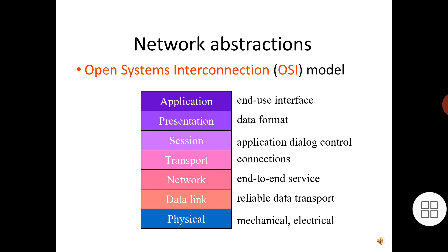The third layer is the network layer, which defines the basic end-to-end data transmission services. The network layer is particularly important in multi-hop networks. The fourth layer is the transport layer, which defines connection-oriented services that ensure data are delivered in the proper order and without errors across multiple links. This layer may also optimize network resource utilization. The fifth layer is the session layer, which provides mechanisms for controlling the interaction of end-user services across a network, such as data grouping and checkpointing.